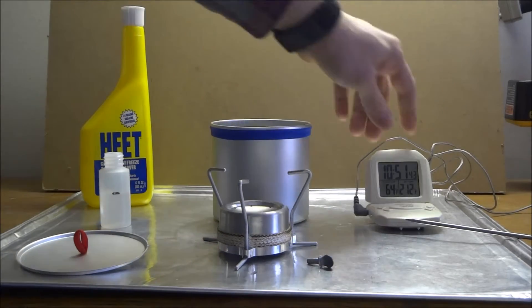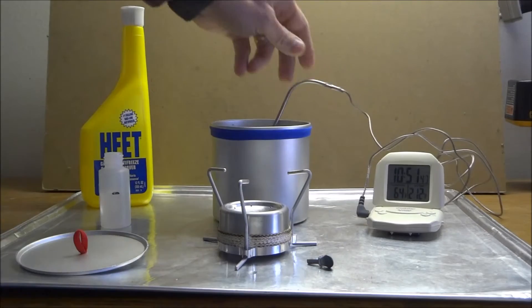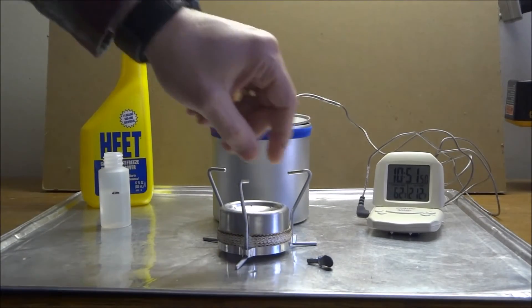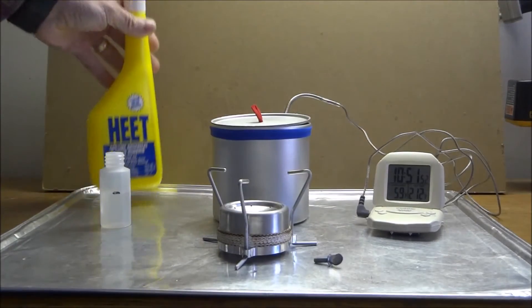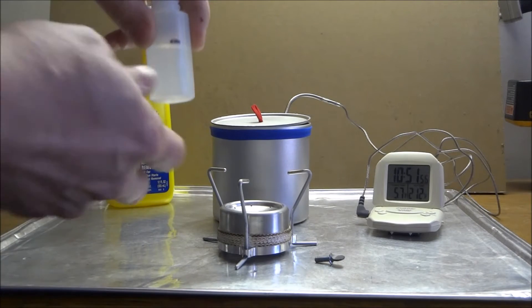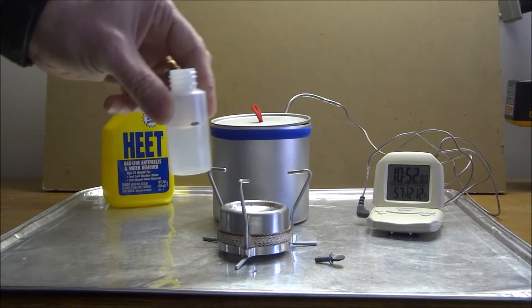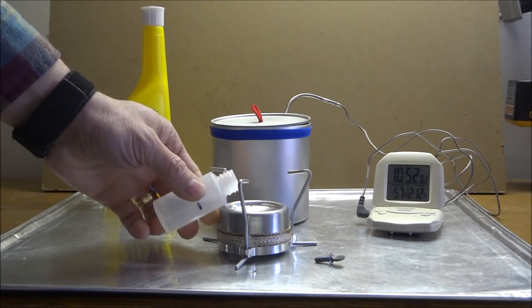Our indoor temp right now is 64 degrees. I'm out in the shop here. And let's see what the water temp is. I've got heat gas line antifreeze. This is a one ounce fuel bottle. I've got it marked at 20 milliliters here. So we're going to use 20 milliliters of heat.